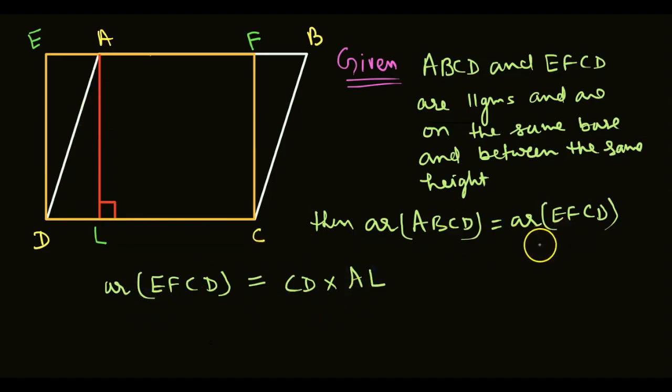So, we have proved here that area of ABCD and area of EFCD are equal. Then area of ABCD will also be CD into AL. Here we can write that in place of area of EFCD, we can write area of ABCD. Area of ABCD is also equal to CD into AL, or DC—both are the same. This proves that area of parallelogram is also base into height.